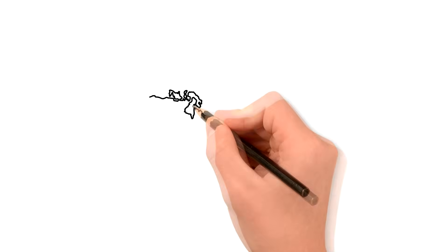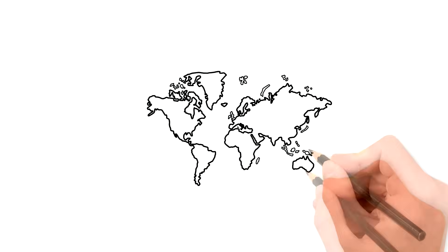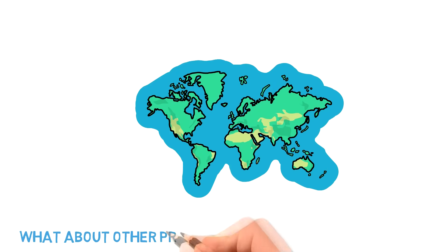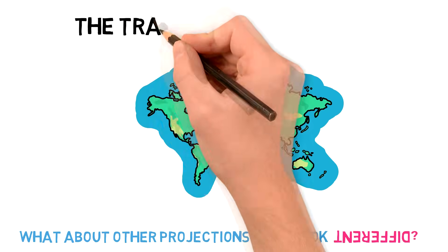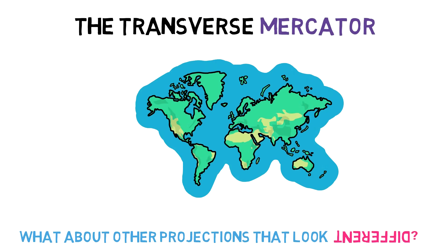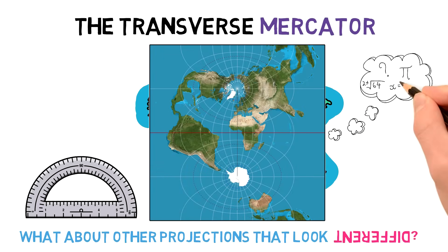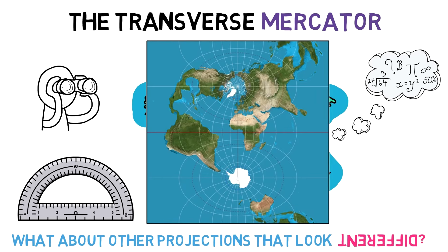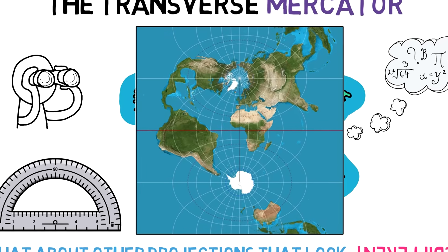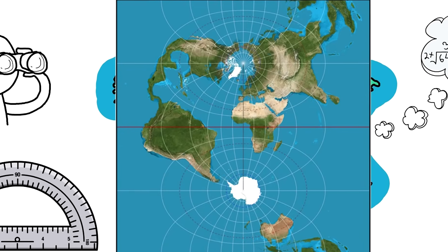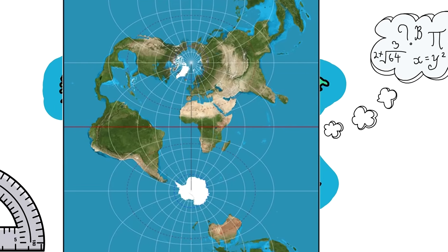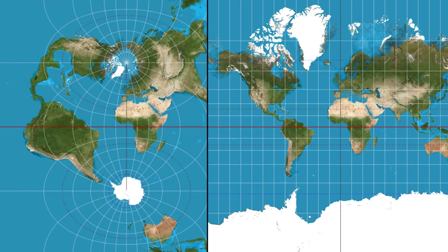All these maps we've seen so far have been pretty standard and straightforward — the way we expect a map to look. But what about all the other projections that look way different? Let's start with the transverse Mercator. It essentially stems from the Mercator projection but depicts it in a different shape and angle. Here, the pole sizes are pretty much near perfection, but other areas suffer as a consequence — Southeast Asia and South America are way too big, but Antarctica is perfectly depicted. So if we were to use the two Mercator projections side by side, we'd have an almost perfect depiction of our world.